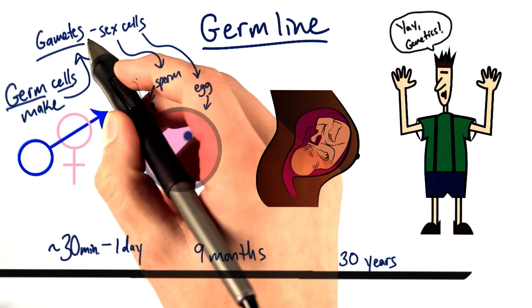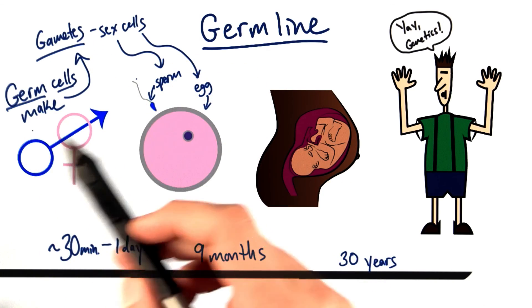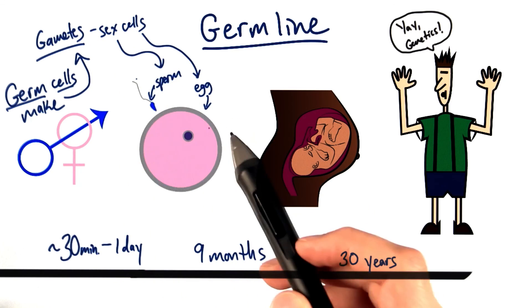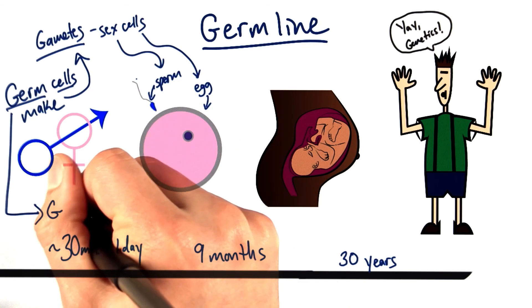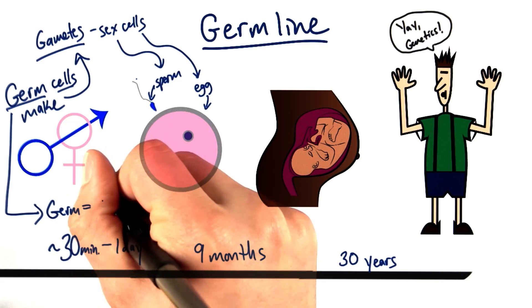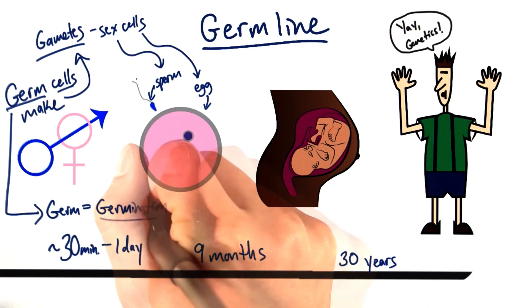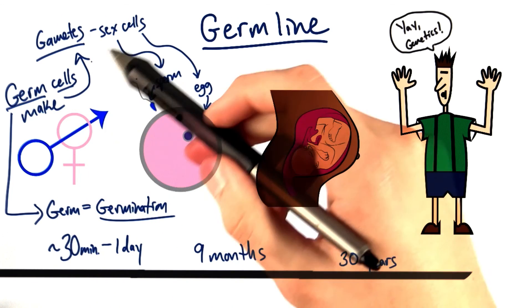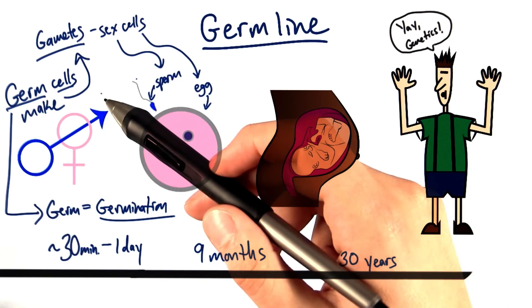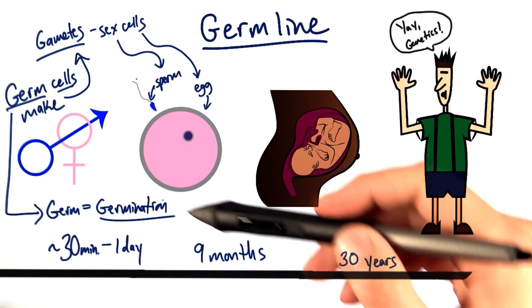Germ cells make gametes. Germ cells are the precursors to the sex cells. The word germ doesn't mean germ like bacteria. It means germ like germination, like a flower. The cells that make our gametes are called germ cells because they are the seeds for our germination.